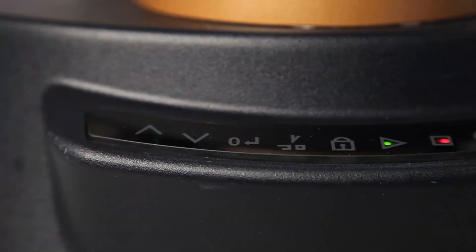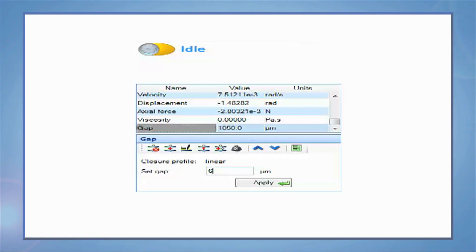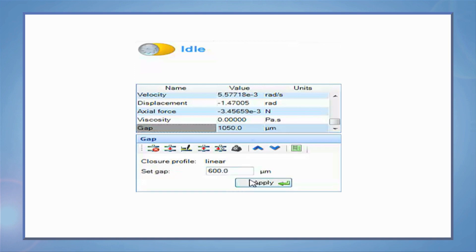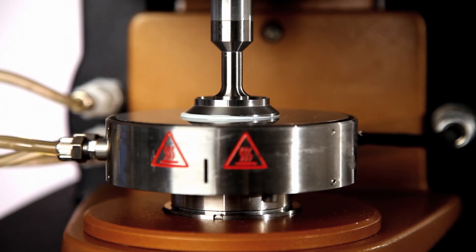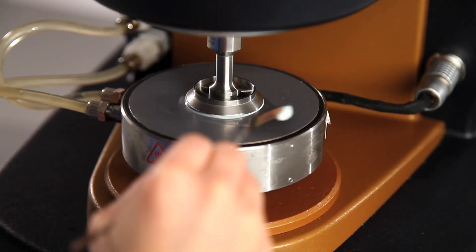The gap can be modified using either the arrows on the touch panel in the front of the rheometer or the gap control panel in TRIOS. Lower the gap until the correct fill is seen or if an excess is noted then sample trimming can be completed.